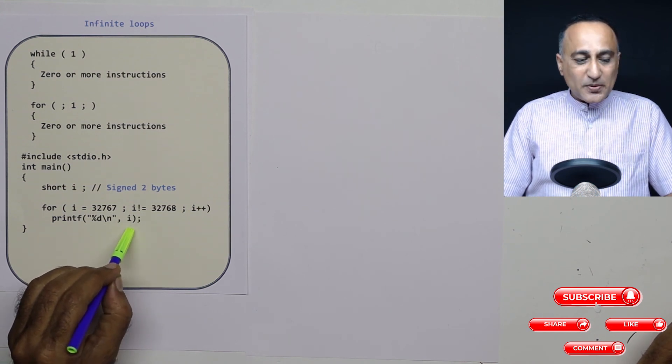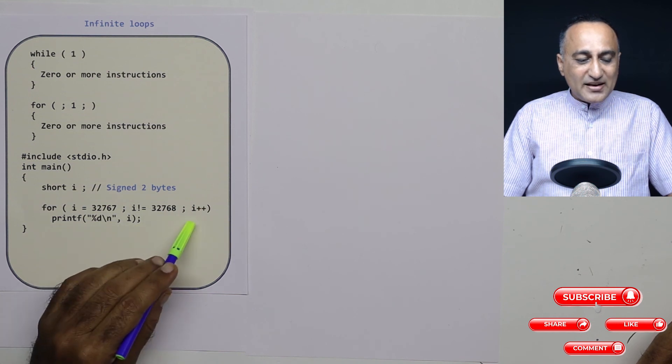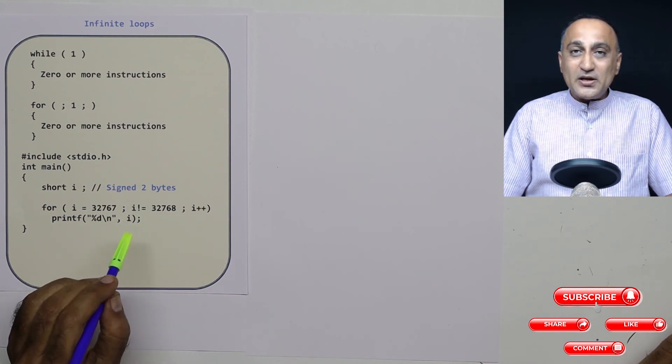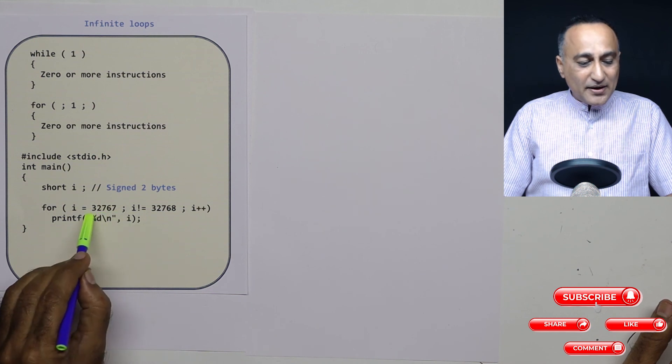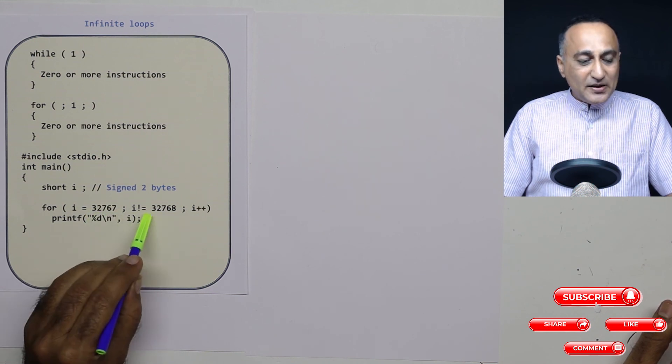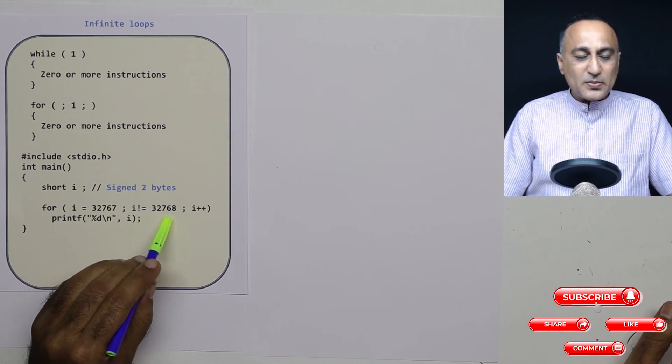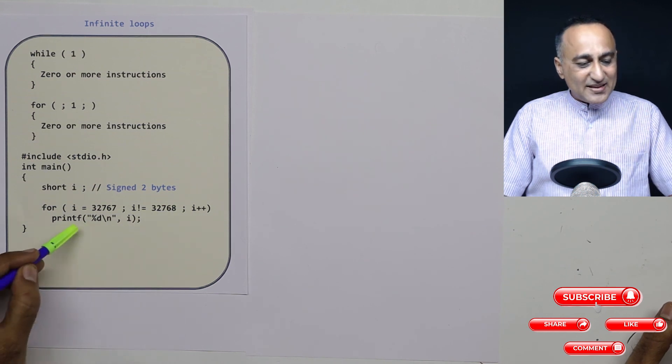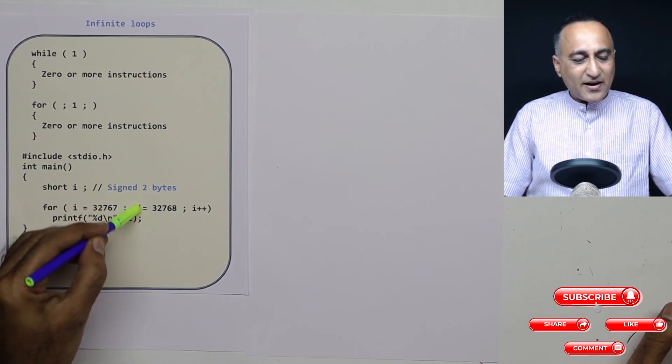Once zero is printed, again when I increase it, this value of i is going to be equal to one. Again, it will reach this maximum limit, but it will at no point end up becoming this particular value. So this is another great example of an infinite loop.